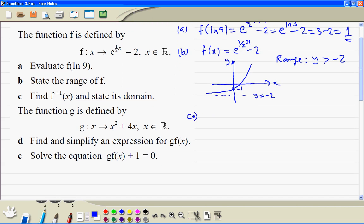Part c. So we write the function e to the power of half x minus 2 equals y. Add 2 on both sides. Take the log, so we got half x is equal to ln of y plus 2.